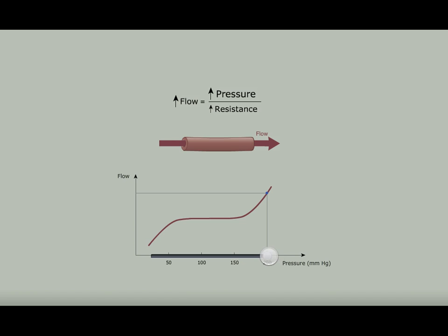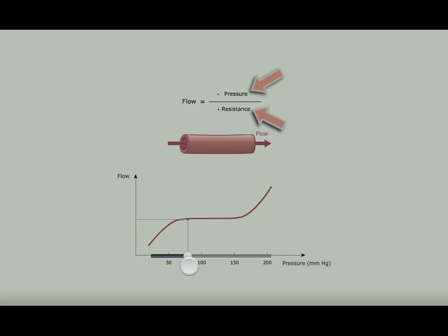If instead the pressure falls, you can see that the vessel is able to alter resistance, this time via vasodilation, over a broad range to keep flow constant. Once again, the change in resistance is proportional to the decrease in pressure, so that flow doesn't change.